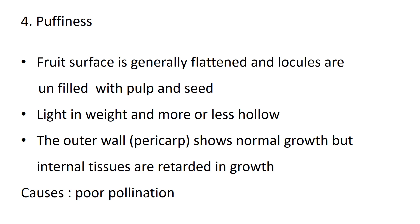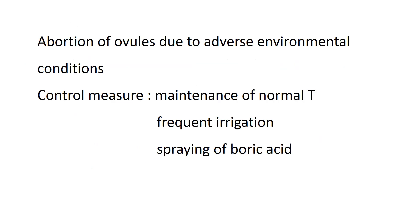Puffiness: fruit surfaces are generally flattened and locules are unfilled with pulp and seed, light in weight and more or less hollow. The outer wall pericarp shows normal growth but internal tissues are retarded in growth. Causes include poor pollination and abortion of ovules due to adverse environmental conditions, particularly high and low temperature.